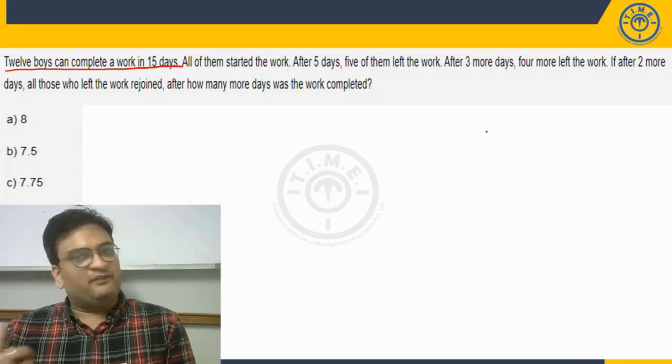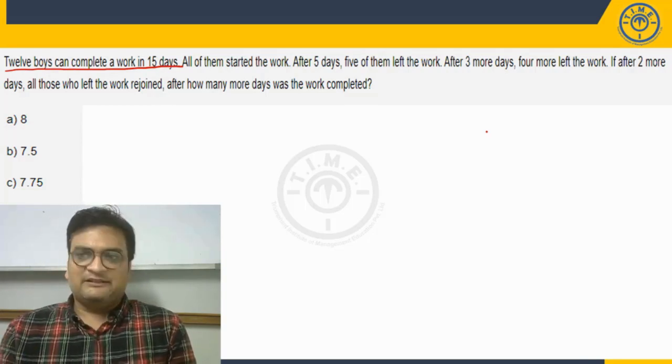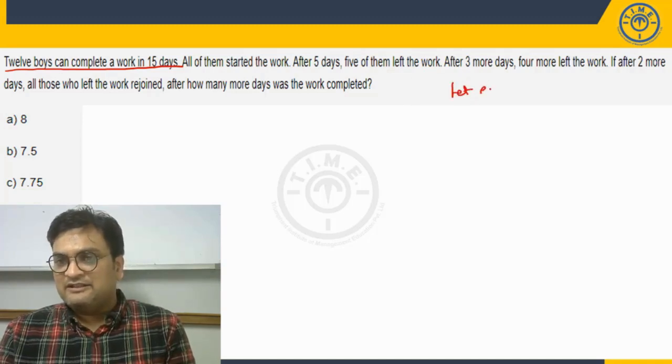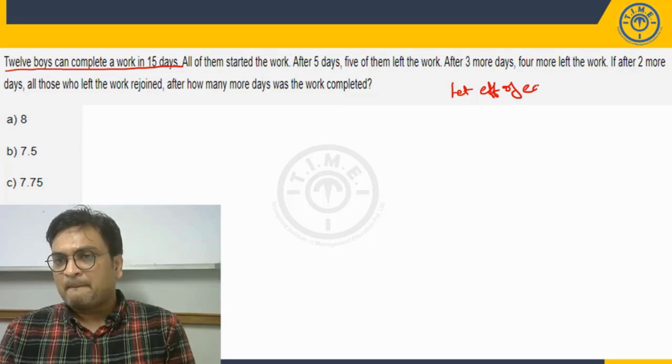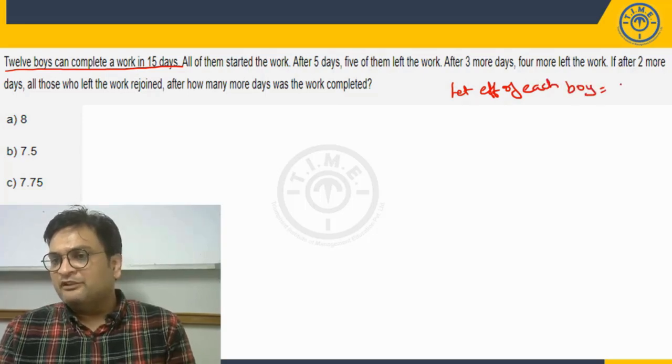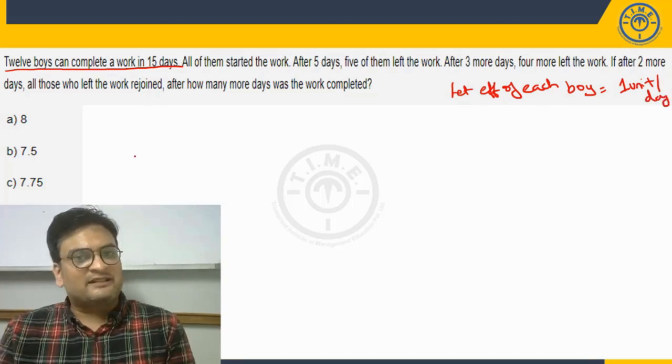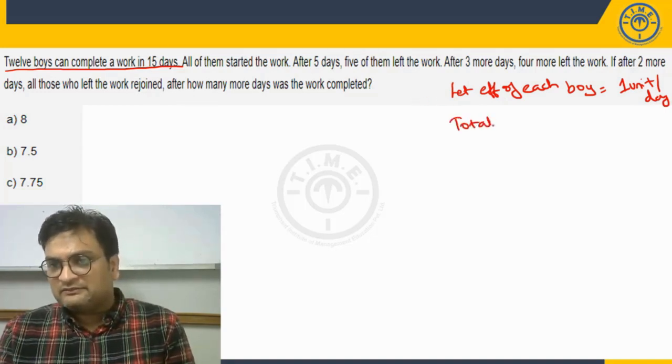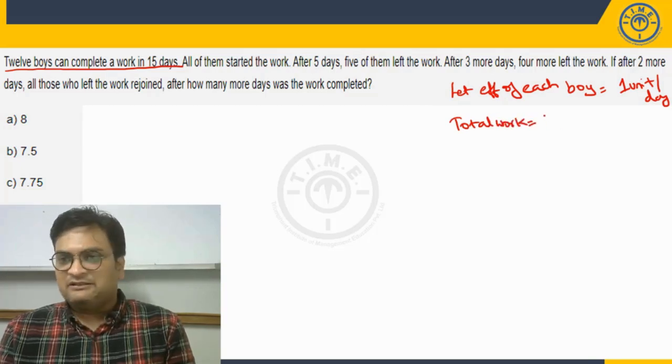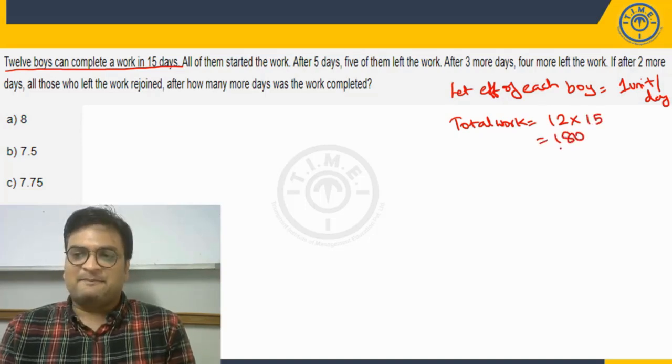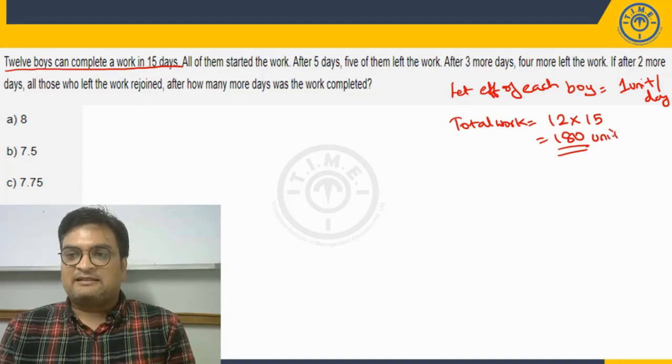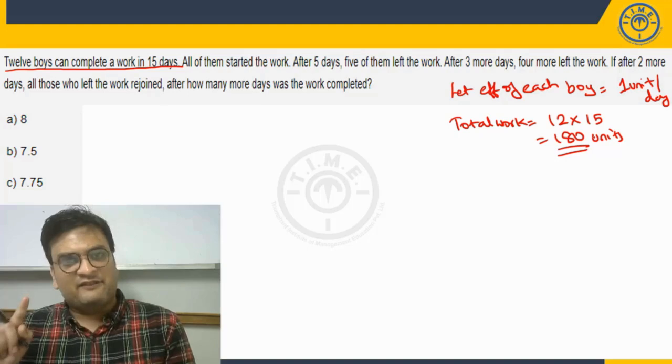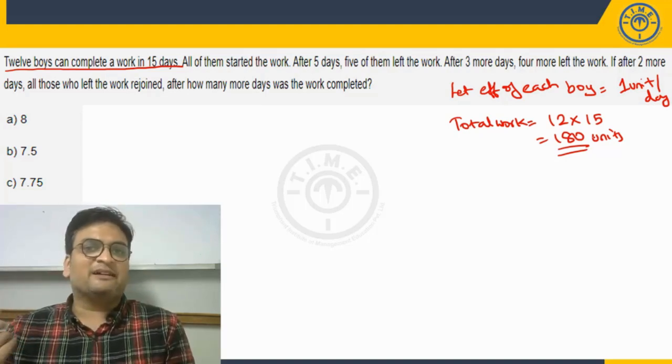So when this is twelve boys, the assumption is we take all of them to be of same efficiency. So twelve boys, let efficiency of each boy be one unit per day. So twelve boys overall will be twelve units per day and they are able to complete the work in fifteen days. That means can I say the total work will be nothing but combined efficiency twelve into number of days fifteen which is one hundred eighty units. So let us consider this. If I take each boy's efficiency as one unit per day, total work is going to be one hundred eighty units.